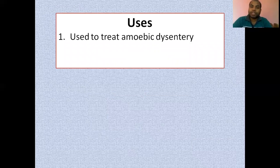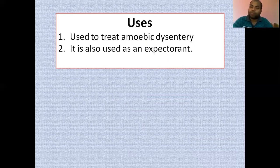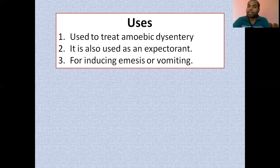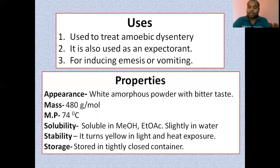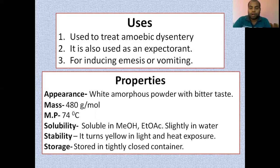In terms of uses, emetine is used to treat amoebic dysentery or amoebiasis. It is also useful as an expectorant to expel mucus from the lungs or respiratory tract, and for inducing emesis or vomiting. In terms of properties, it is a white amorphous powder with a bitter taste — emetine is a bitter alkaloid with a molecular weight of 480 g/mol, a melting point of 74°C, and is soluble in methanol and ethanol, and slightly soluble in water due to its alkaloid property. It turns yellow on exposure to light and heat and should be stored carefully.